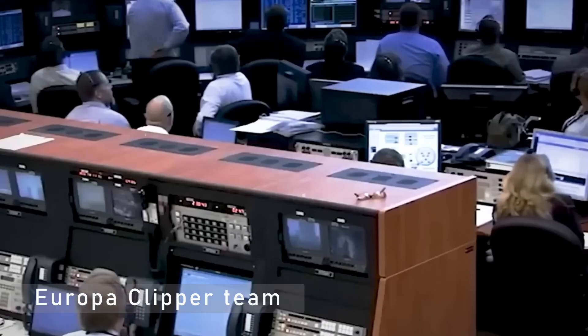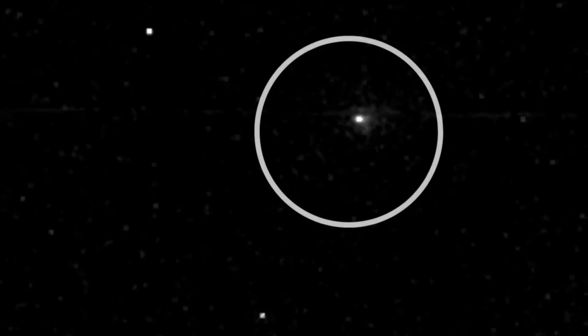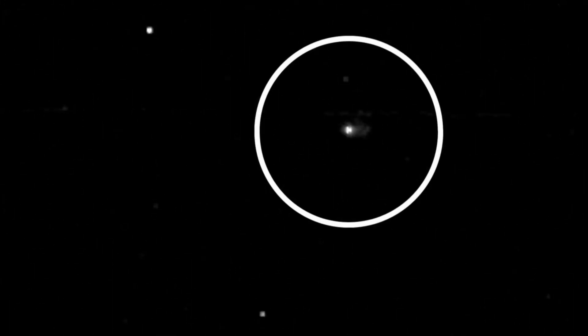For the Europa Clipper team, it was poetic symmetry, a mission built to study the icy moons of Jupiter, now crossing paths with a relic from beyond the stars. The universe, it seemed, had a sense of timing.